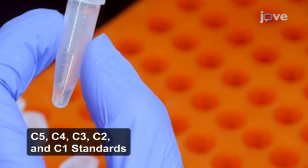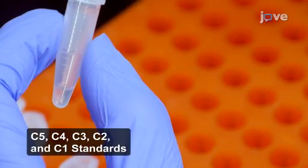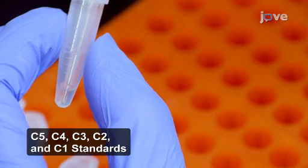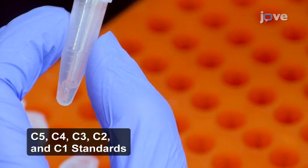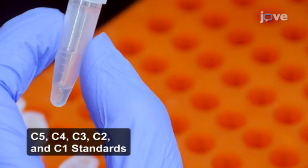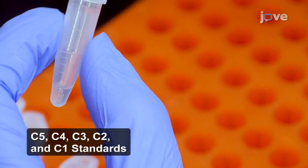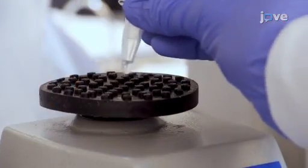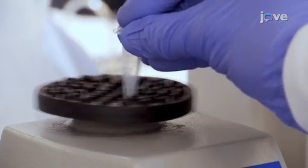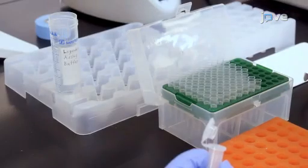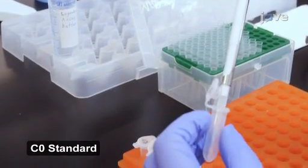Continue performing serial 1 to 4 dilutions by using a new pipette tip for each tube to add 25 microliters of the previous standard to the 75 microliters of assay buffer in the next lowest standard tube. Follow each addition by vortexing. Use assay buffer as the 0 picograms per milliliter standard.